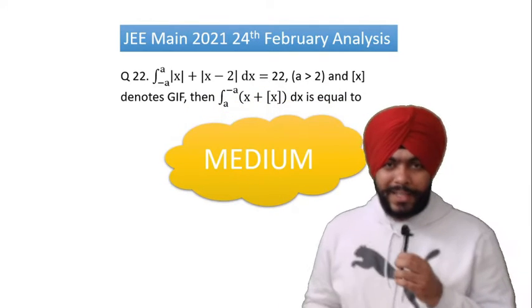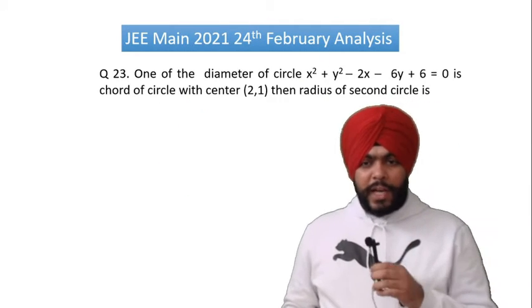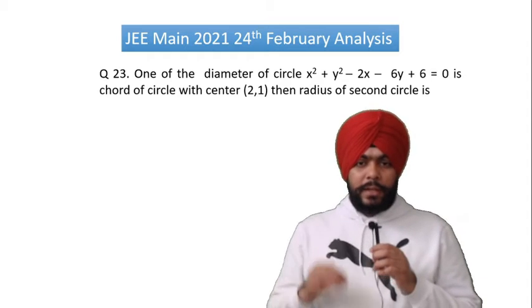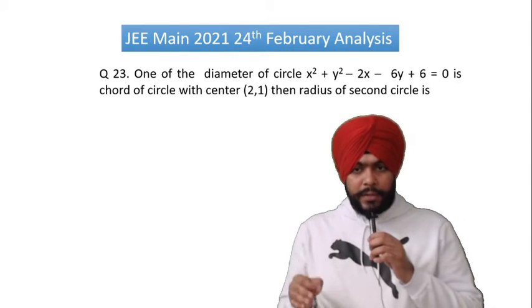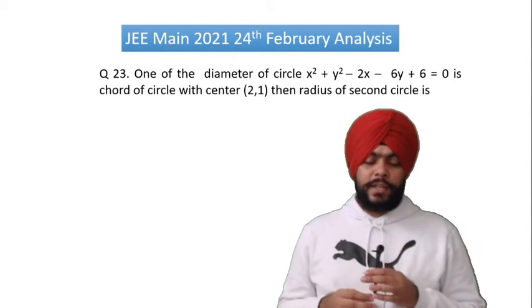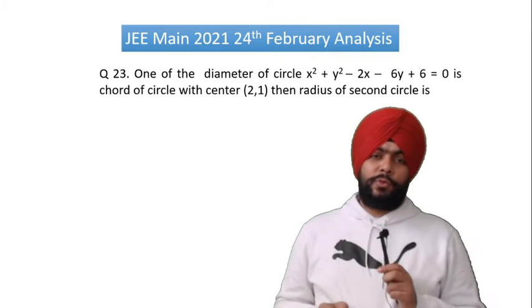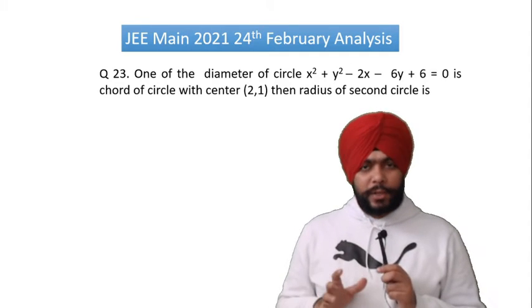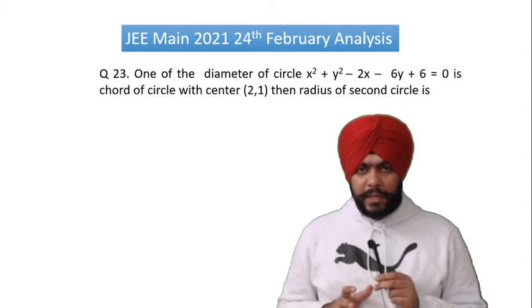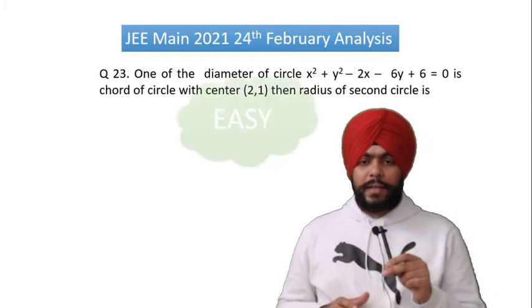Question number 23: one of the diameters of the circle is a chord of another circle. If you make the diagram for this, it becomes a very easy question. So I will put it into the easy category.